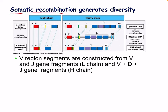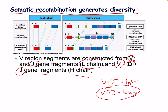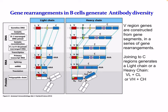Somatic recombination generates further diversity. Variable region segments are constructed from V and J gene fragments in the light chain, and V, D, and J gene fragments in the heavy chain. The joining to constant regions generates either a light chain (VL and CL) or a heavy chain (VH and CH). The variable regions are constructed from gene segments in a series of gene rearrangements.